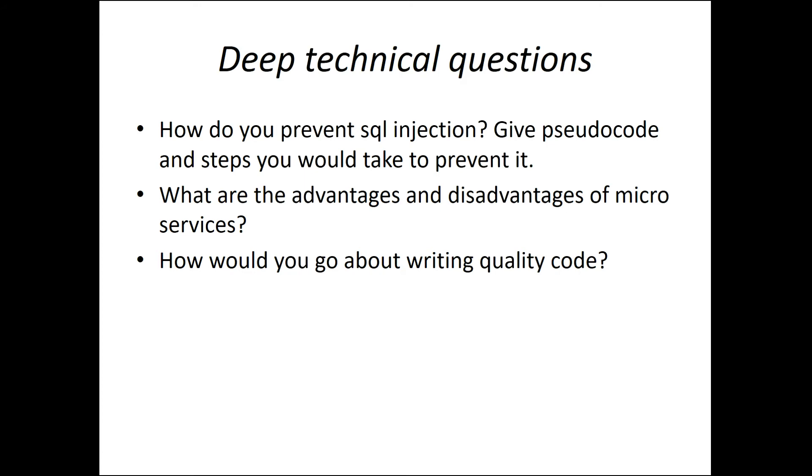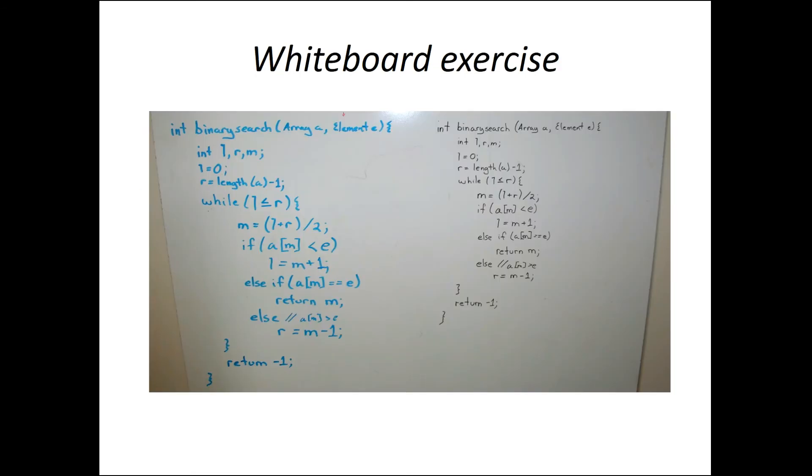Another deep technical question would be: what are the advantages and disadvantages of microservices? I've gotten questions like this before on interviews where they ask about the advantages and disadvantages. This can be somewhat of a tricky question because usually when we think about a certain technology, we're only thinking about the advantages, but we never really compared to other technologies and talked about the disadvantages or why we wouldn't use a certain type of technology. Another example would be: how would you go about writing quality code? As you can see here, this is not just a simple one word response that you would give. There'll be multiple things that you would do in order to go about writing quality code.